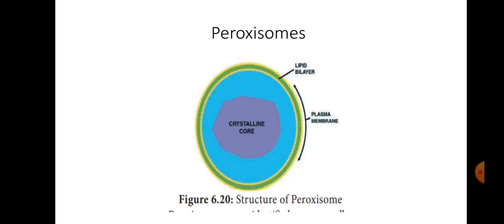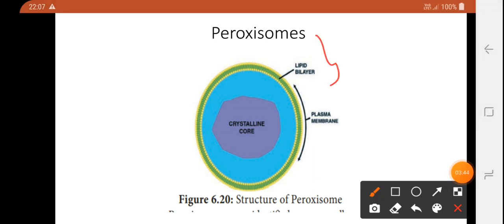This is Peroxisomes. Peroxisomes oxidize biomolecules — this is a very important process. The structure of a peroxysome is simple: there is a lipid bilayer surrounding it, and inside there is a crystalline core, which is the main substance of the peroxysome.